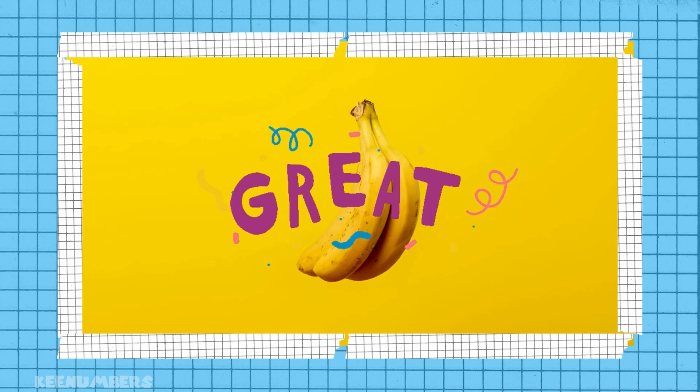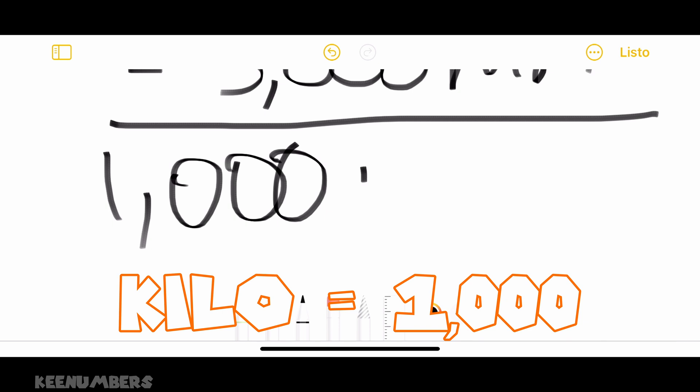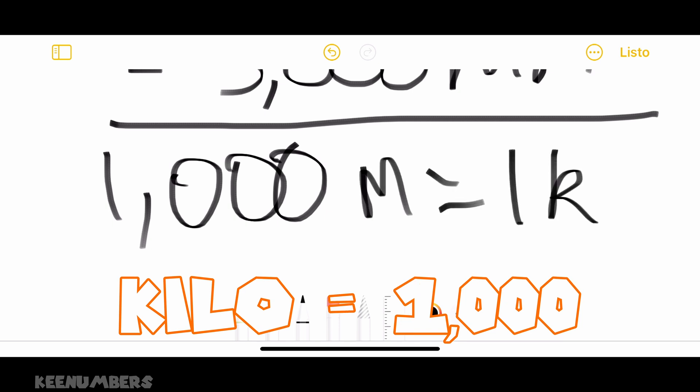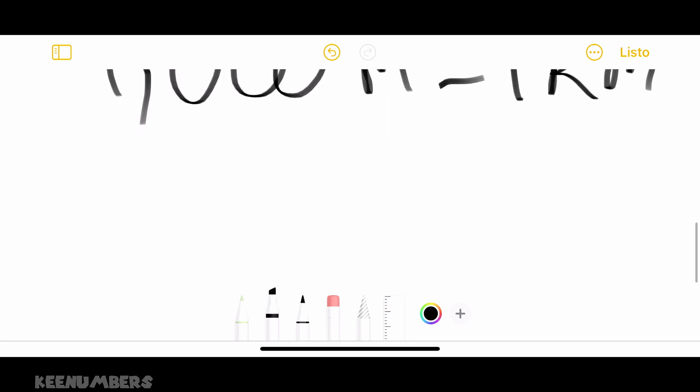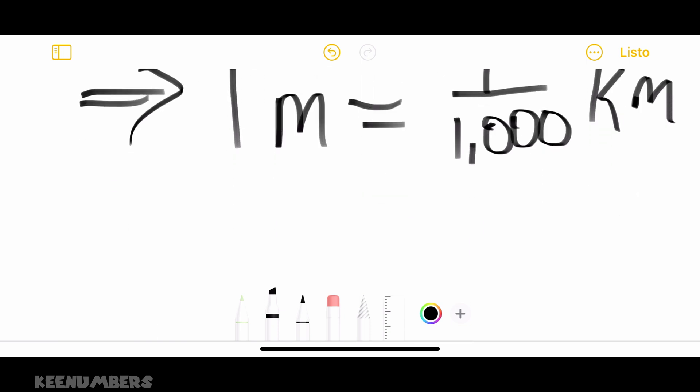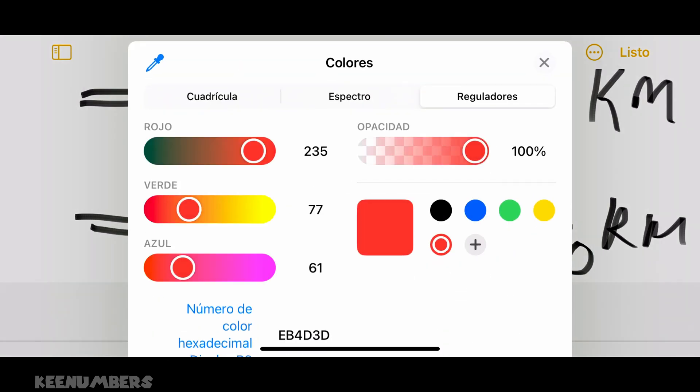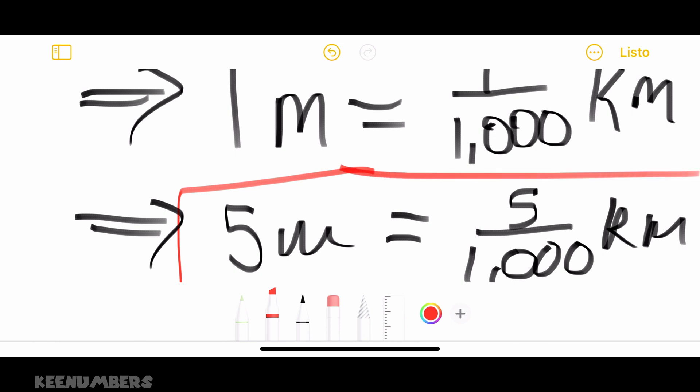We know that there are one thousand meters in every kilometer, because the prefix kilo means one thousand. And so that means that one meter is equal to one one-thousandth of a kilometer. Because you need a thousand meters to get a kilometer. So just one meter, that's only one one-thousandth of a whole pie. That means that five meters is equal to five of these thousandths of a kilometer. And then you got to get a different color out, like red or green. Because let's face it, red and green are complementary colors. Circle your answer, and Bob's your uncle.